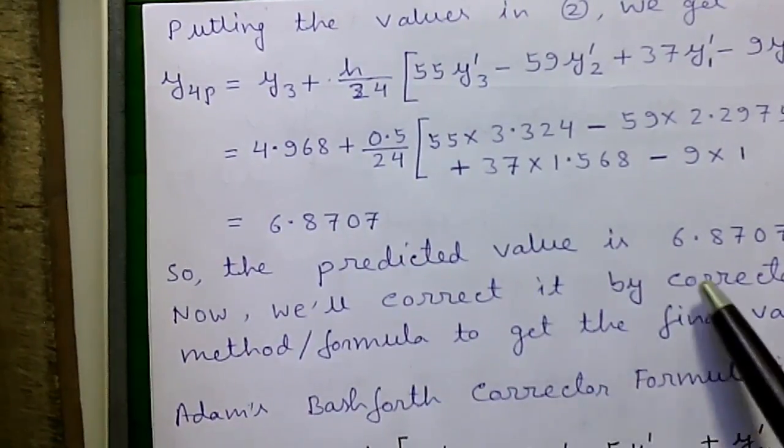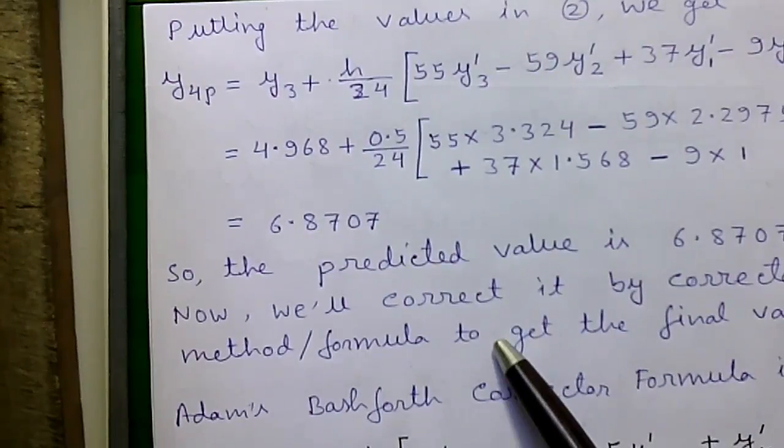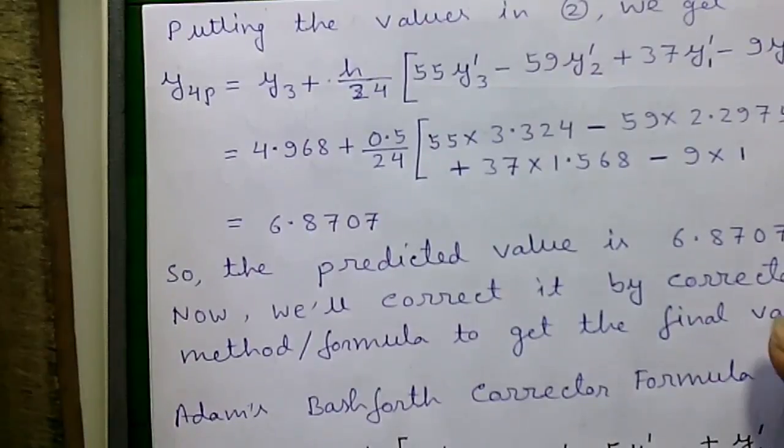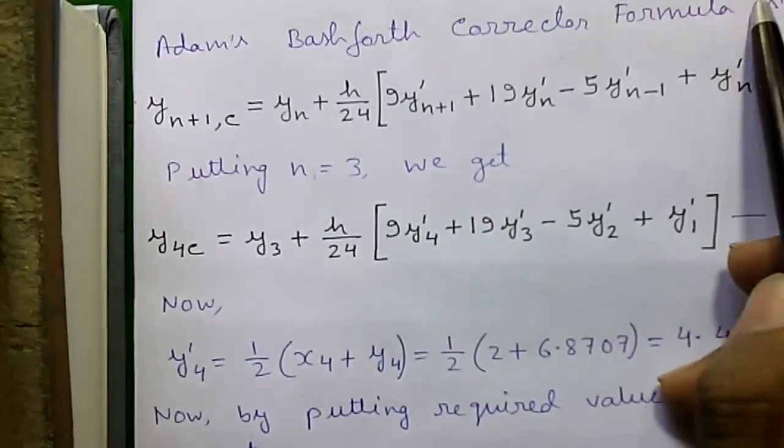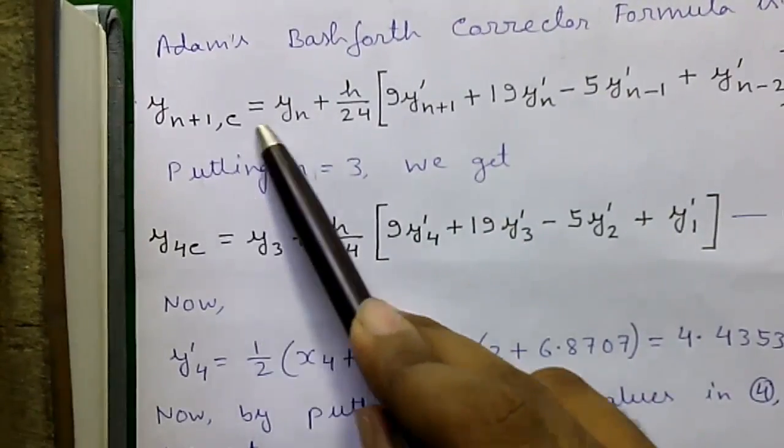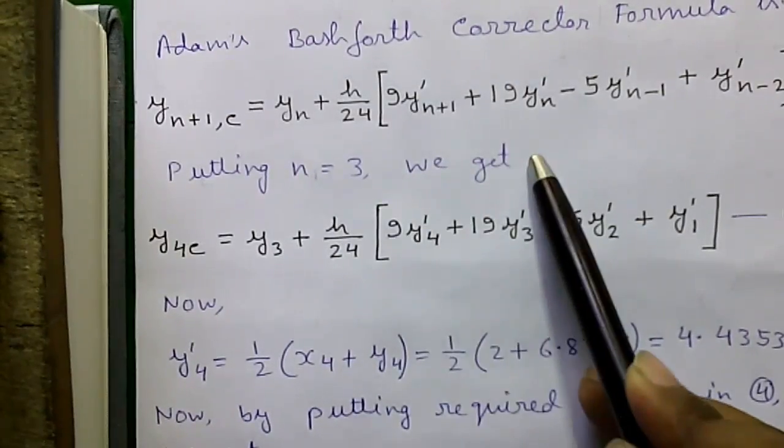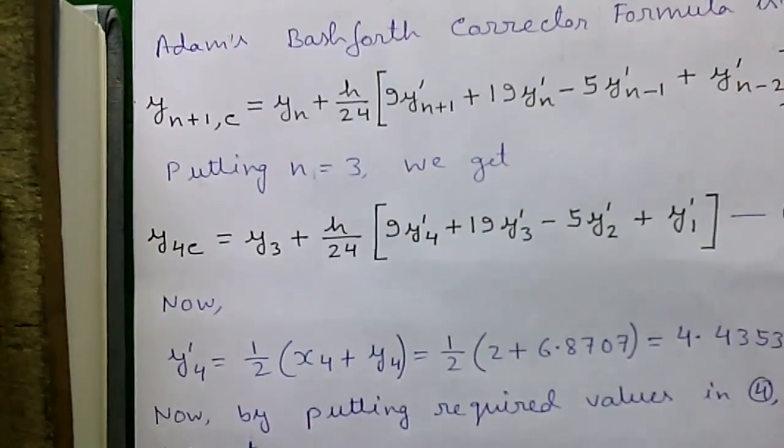Now, we will correct it by the corrector formula to get the final or the accurate value. So, Adams-Bashforth corrector formula is given below. This is the formula. Now, by putting n equal to 3, we will get this simplified formula, which we will use to calculation.